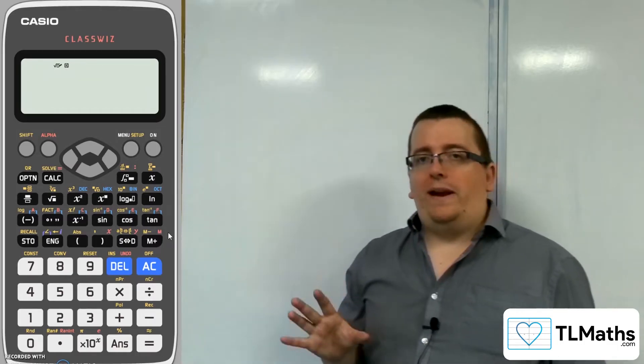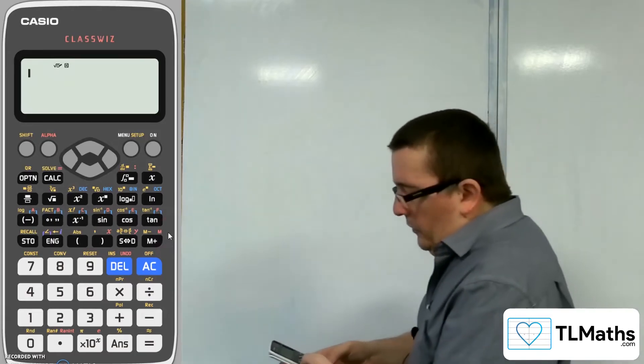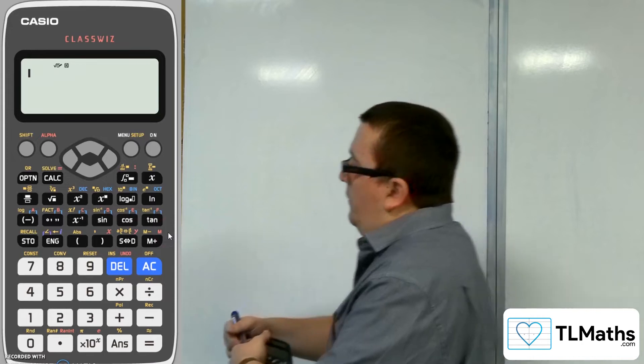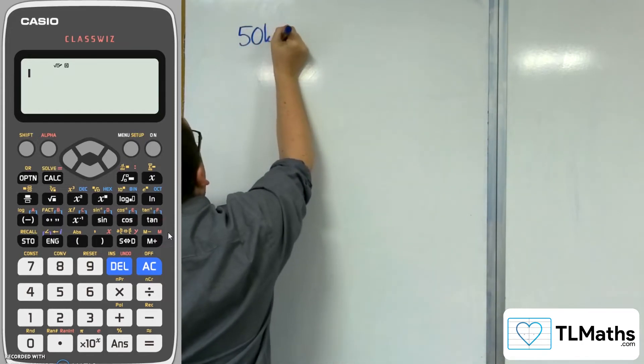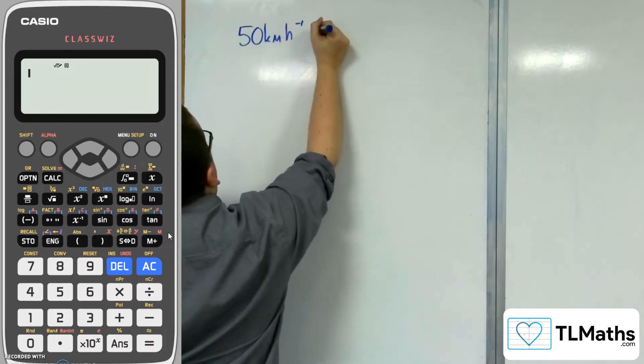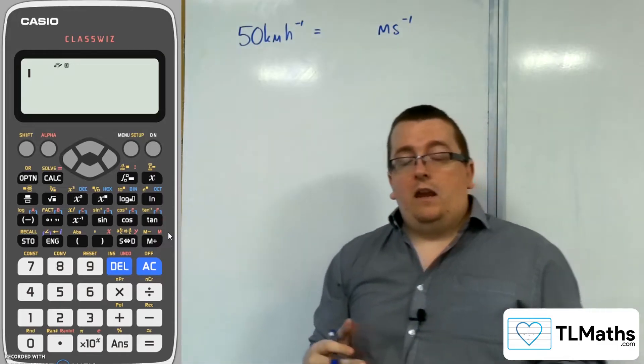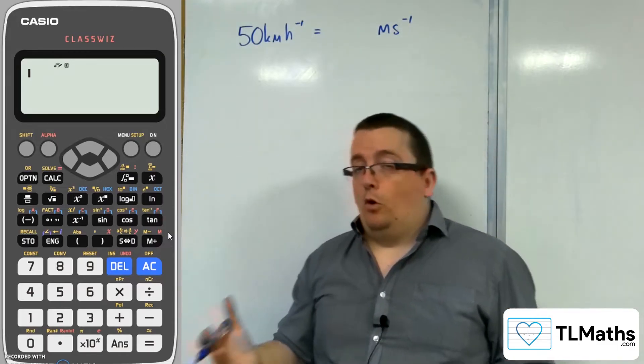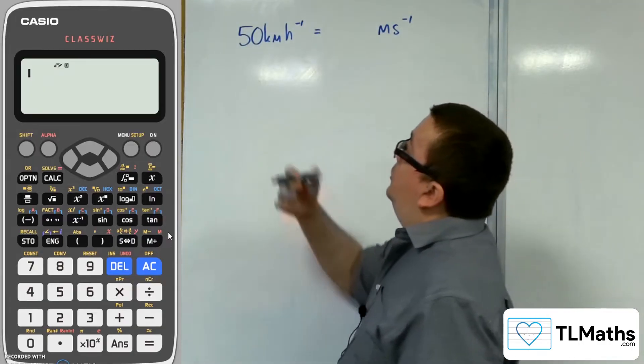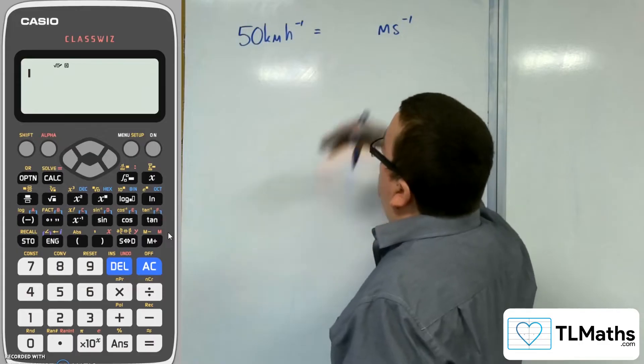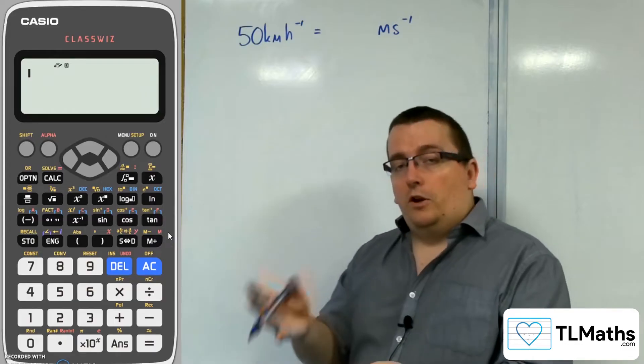Now your calculator also has a convert button. You may or may not have seen this. This is above the number 8. Let's say we wanted to convert 50 kilometers per hour into meters per second. Let's say you forgot how to do this in the exam or you didn't trust what you had written down was correct. In order to do this, you would multiply through by 1,000, then divide through by 60, divide through by 60 again. Or you can go to your calculator.